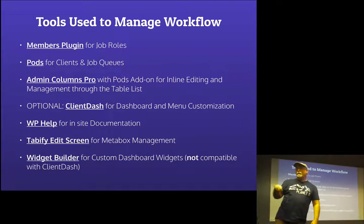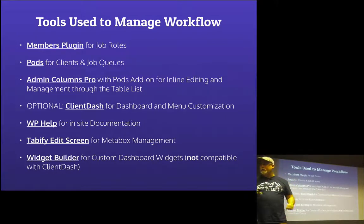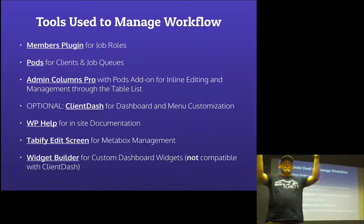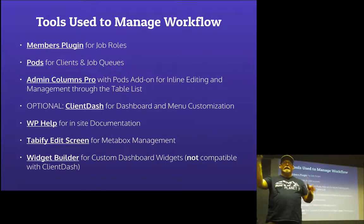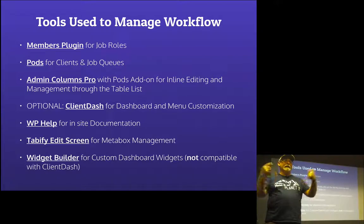I'm going to use Admin Columns Pro — all of these have a link behind them, so when you download the slide you can click those links and go directly to those plugins. Admin Columns Pro is a plugin that allows you to take the table and add additional columns into it based on your custom post type — you can add a featured image, more taxonomy information. In their most current version, they've integrated with the Pods plugin to show relationship fields and allow inline editing, sorting, and filtering.